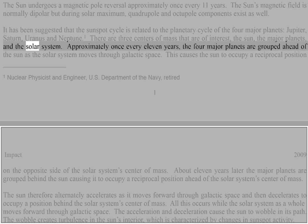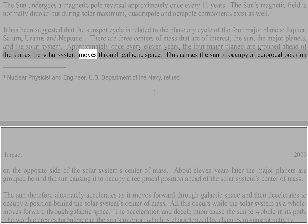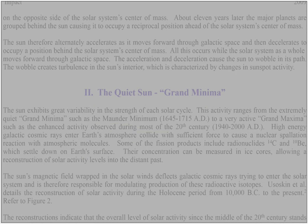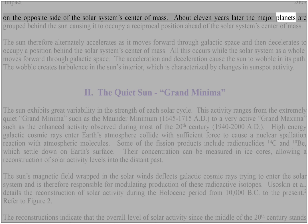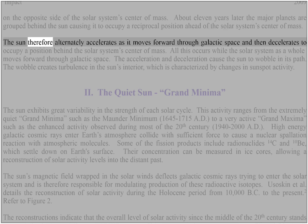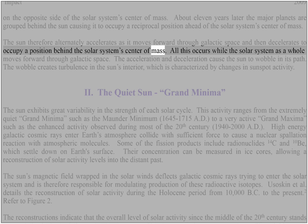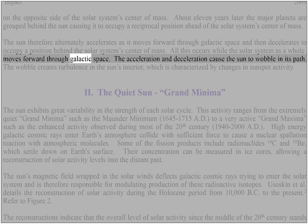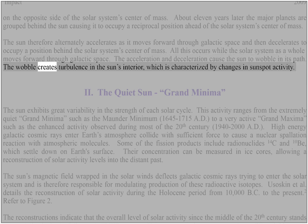The Sun undergoes a magnetic pole reversal approximately once every 11 years. The Sun's magnetic field is normally dipolar, but during solar maximum, quadrupole and octopole components exist as well. It has been suggested that the sunspot cycle is related to the planetary cycle of the four major planets — Jupiter, Saturn, Uranus and Neptune. There are three centers of mass of interest: the sun, the major planets, and the solar system. Approximately once every 11 years, the four major planets are grouped ahead of the sun, causing the sun to wobble in its path, creating turbulence in the sun's interior characterized by changes in sunspot activity.